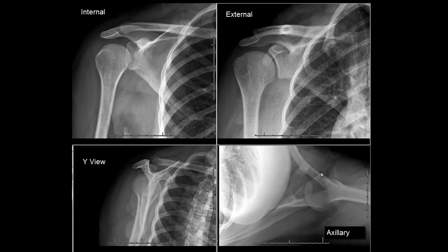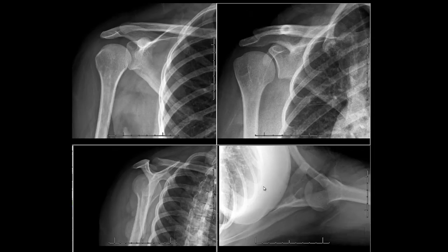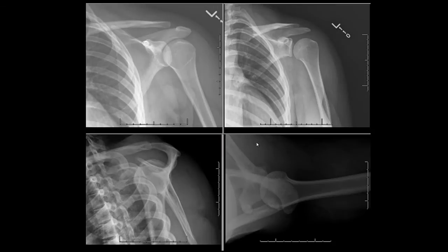In this axillary view, which is obtained with the beam shooting towards the armpit, you see the clavicle, glenoid, and the humeral head. The humeral head in this case is sitting nicely within the glenoid. I find the axillary view very helpful to identify anterior and posterior shoulder dislocations.